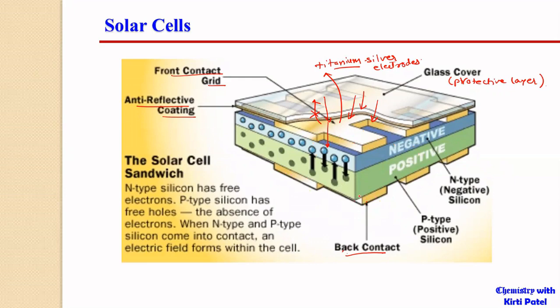The bottom surface is completely covered by the back contact made of titanium, silver electrodes, or any other good conducting metals. Just below the anti-reflective coating is the front grid of electrodes, and the last one is the back grid of electrodes, which is the back contact. Below the front electrodes is the N-type semiconductor, and then the P-type semiconductor, followed by the back contact.